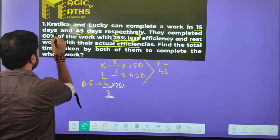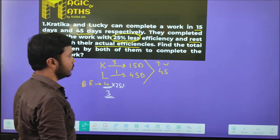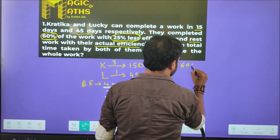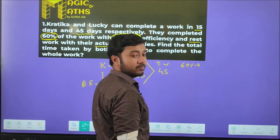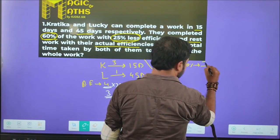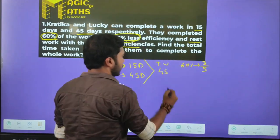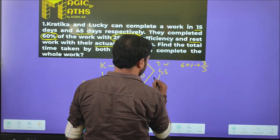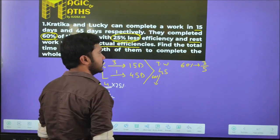So total work 60%. 60% as a fraction - 20% means 1 by 5, 60% means 3 by 5.